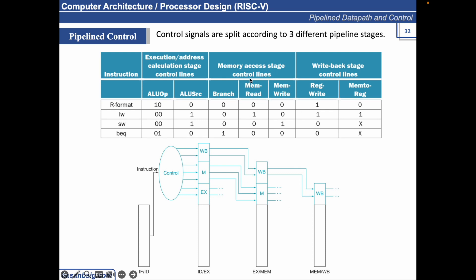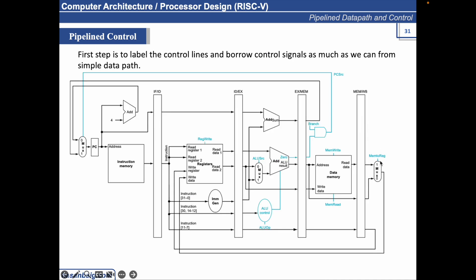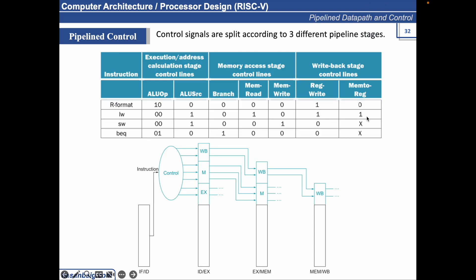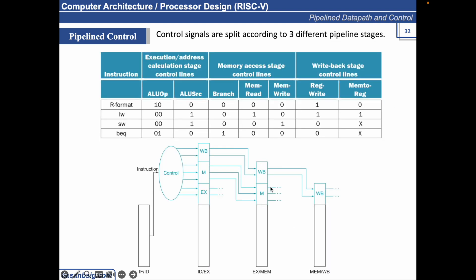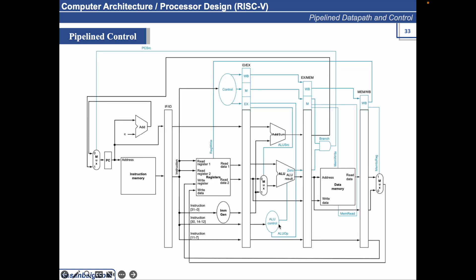In the memory access control stage, we have the branch signal, the memory read signal, and the memory write signal, depending on whatever instruction is being executed. In the write-back stage, we will be specifying mem2reg — where the data is coming from — and RegWrite. So the updated pipeline diagram with the control circuitry shows control signals generated during the decode stage, stored in the ID/EX pipeline register. The execution control signals are utilized in the EX stage, so there is no need to carry those signals forward into the next register. The memory phase and write-back phase signals are carried forward and stored in the EX/MEM register.